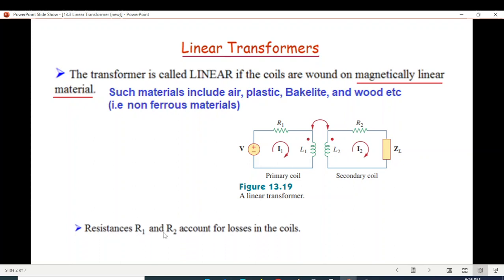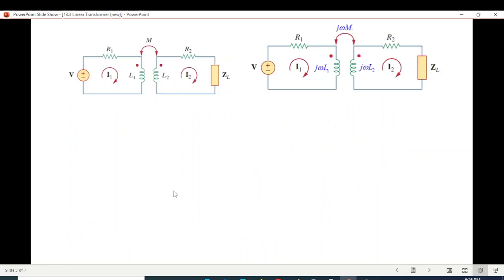The resistance R1 and R2 account for losses in the coil. These two coils are the primary and secondary coil. Losses of the primary are R1, losses of the secondary are R2. So this basic circuit we have now written in phasor form. L1 and L2 we write as j omega L1 and j omega L2. And mutual inductance M we write as j omega M.